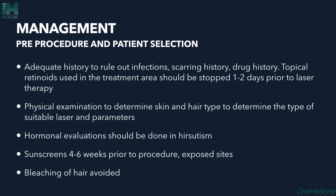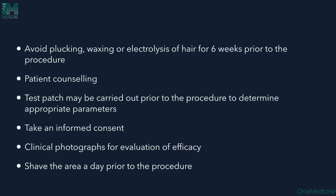Management — pre-procedure and patient selection: adequate history to rule out any infections, scarring history, and drug history needs to be taken. Topical retinoids used in the treatment area should be stopped 1 to 2 days prior to laser treatment. Physical examination is needed to determine the skin type, hair type, and which laser parameter and laser is suitable. Hormonal evaluation is needed if the patient has hypertrichosis. Sunscreens 4 to 6 weeks prior to the procedure help in exposed sites. Bleaching of the hair is avoided. Plucking, waxing, and electrolysis of the hair should be stopped 6 weeks prior. Patient counselling is important; a test patch may be tried before actual treatment.